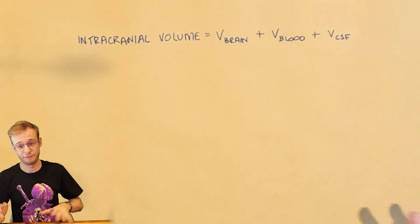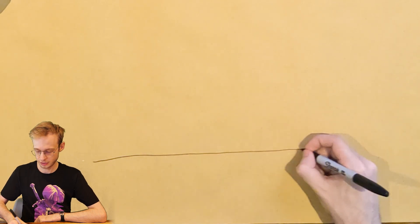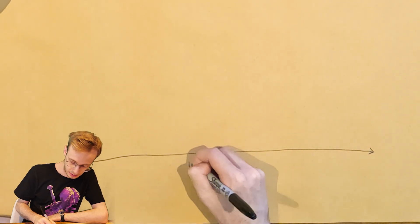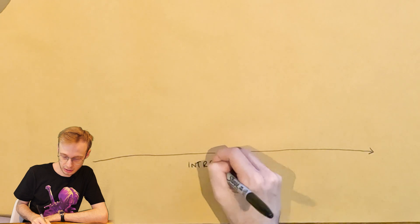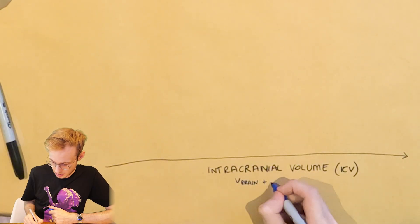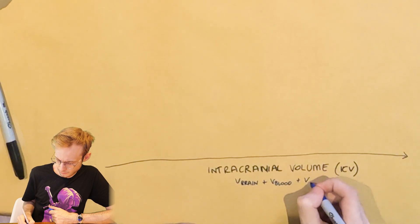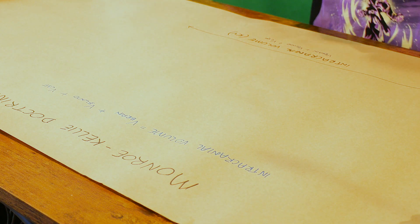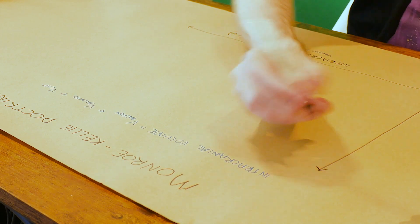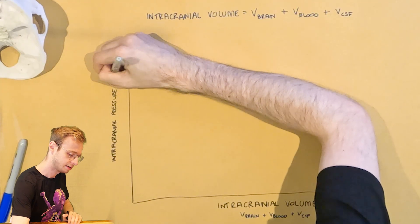So now let's draw a graph, everyone's favorite thing to understand this visually. I'm going to have a nice big graph, and on the x-axis going this way, we have intracranial pressure, or ICP.